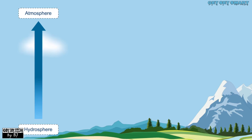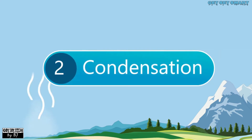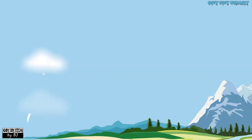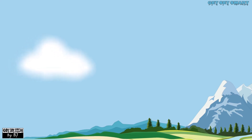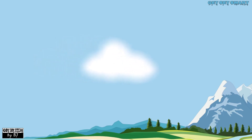In condensation, water vapor rises up into the atmosphere. At higher altitudes, the temperature is very low, causing the water vapor to change into very tiny water droplets. These particles come close together and form clouds and fog in the sky.